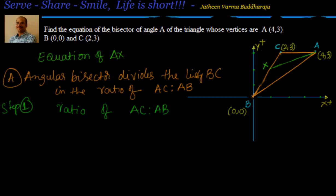Step 1: Find the ratio AC : AB. AC goes from (4, 3) to (2, 3) — it's a horizontal line, so the distance is clearly 2. For AB, from (0, 0) to (4, 3), it's √(4² + 3²) = √25 = 5. So AC : AB = 2 : 5. We've found the ratio.